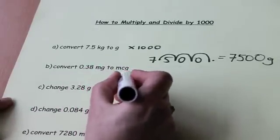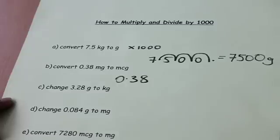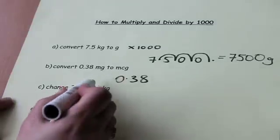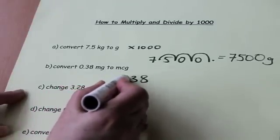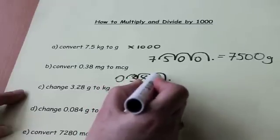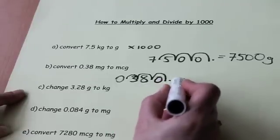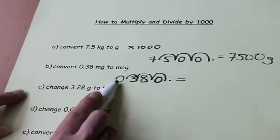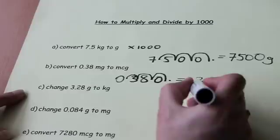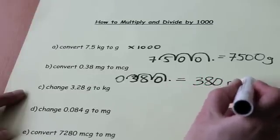So I will write down 0.38 and once again to multiply by 1,000 we move the decimal point three places to the right. It's now at the end and this loop is filled with zeros. We need to tidy this up, remembering that this zero here is no longer needed. And so the answer is 380 micrograms.